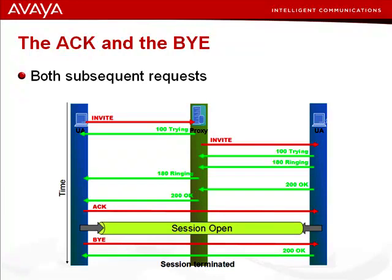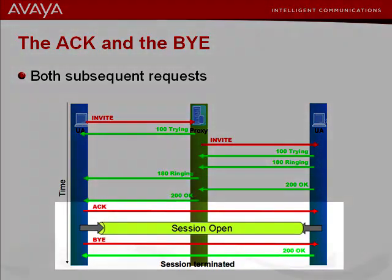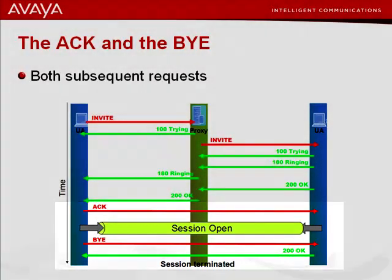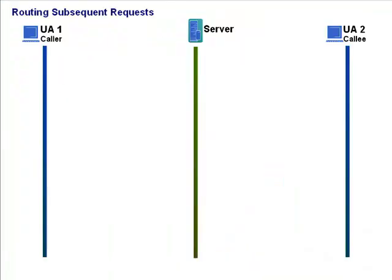As far as SIP is concerned, the server has fulfilled this role. It's done its job in resolving the addresses and proxying downstream to the endpoint. There's nothing else it should be doing regarding the location process — the location is complete. Both parties now have each other's contact address and from here on can interact directly between themselves with no need for any help from the server. Remember how route sets work and how they're used for routing subsequent requests like the ACK and the BYE.